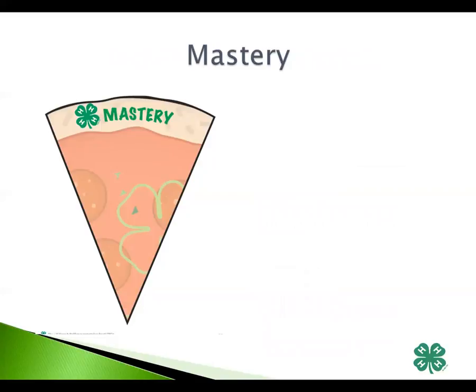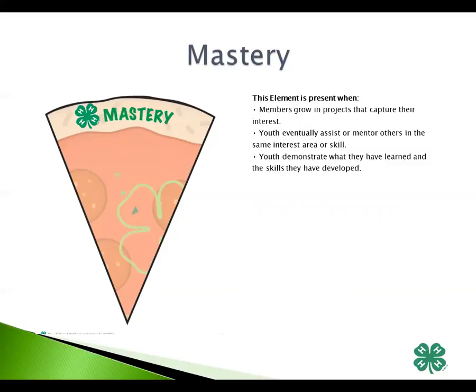The next essential element is mastery. Mastery is the building of knowledge, skills, and attitudes, and then demonstrating those new skills. The level of mastery is dependent on the developmental ability of each youth. The development of mastery is a process that takes place over time and could be many years. This element is present when members grow in project areas that capture their interest, youth eventually assist or mentor others in the same area, and youth demonstrate what they have learned and the skills they have developed.